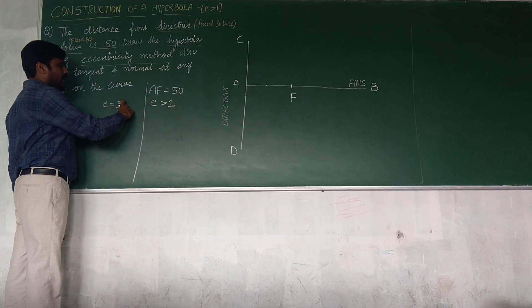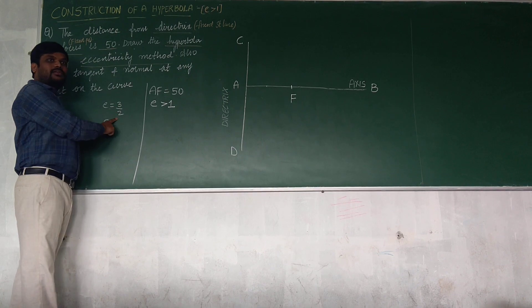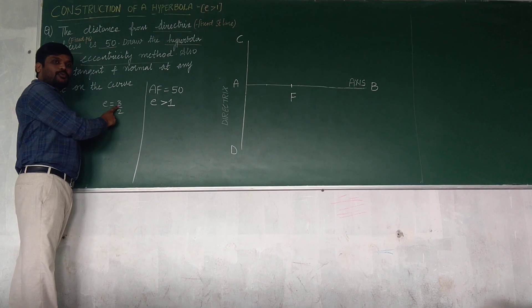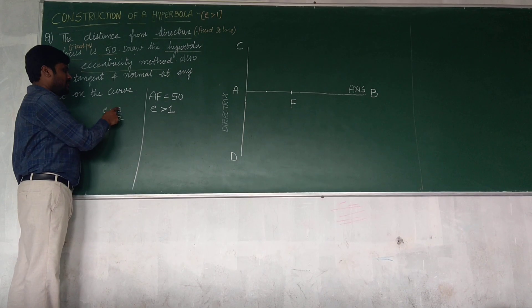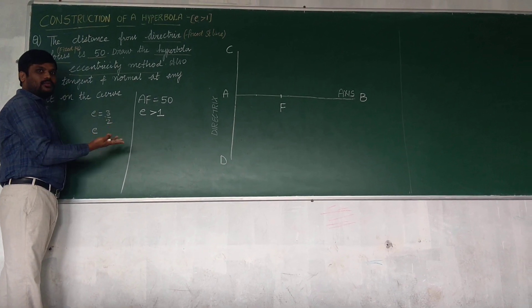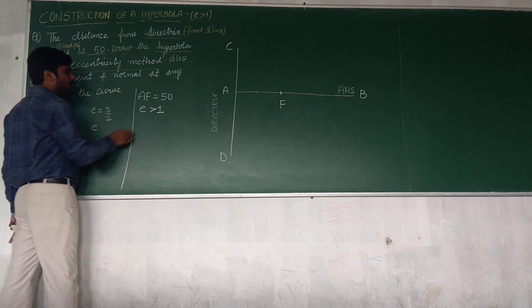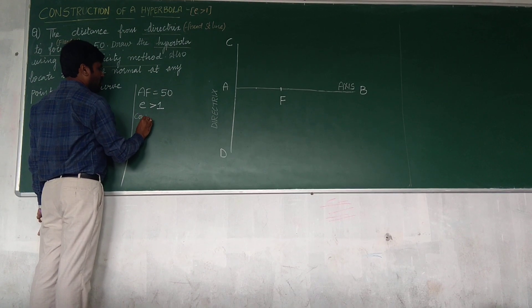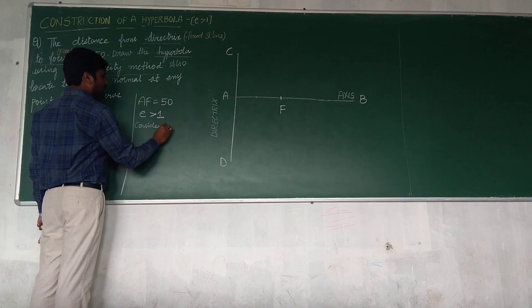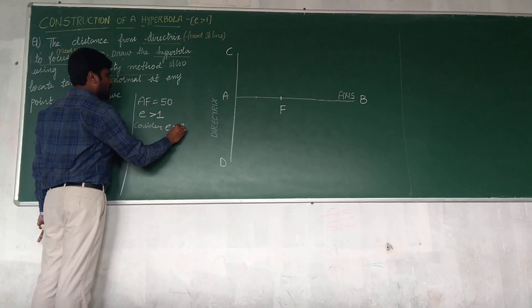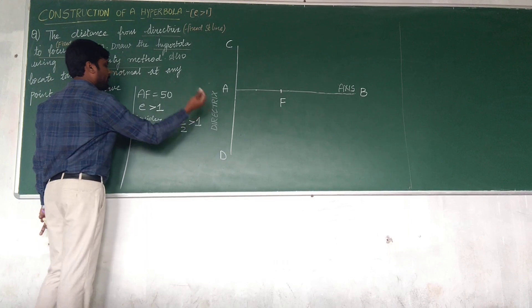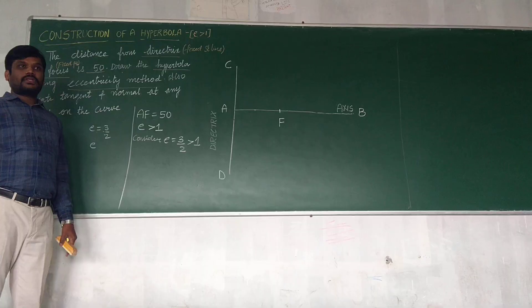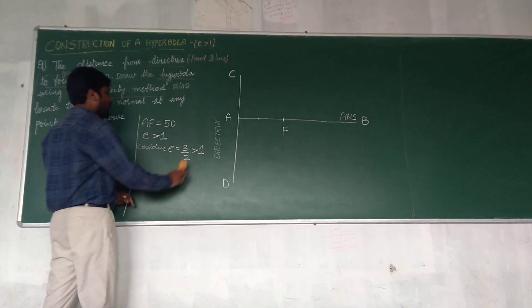So take the fraction value which is greater than 1, either 3 by 2 or 4 by 3 or 2 by 1. 2 by 1 is greater than 1. Similarly I am considering 3 by 2. My e value is 3 by 2 which is greater than 1.